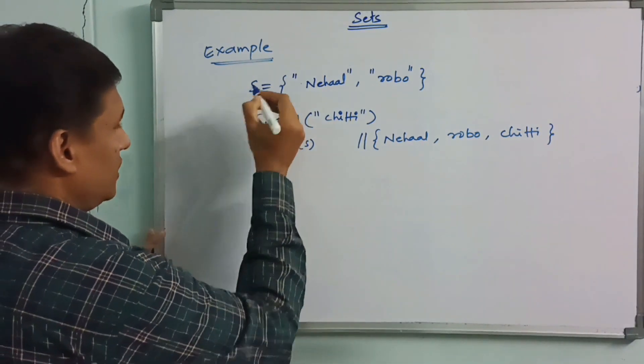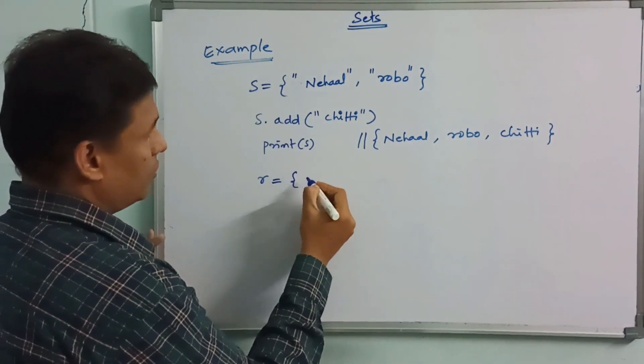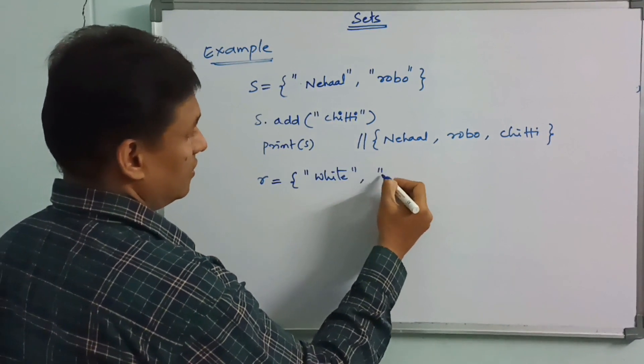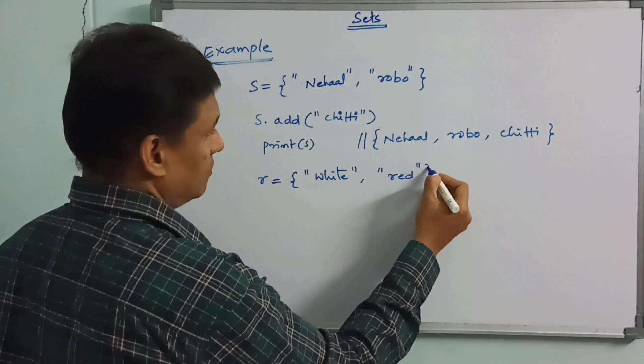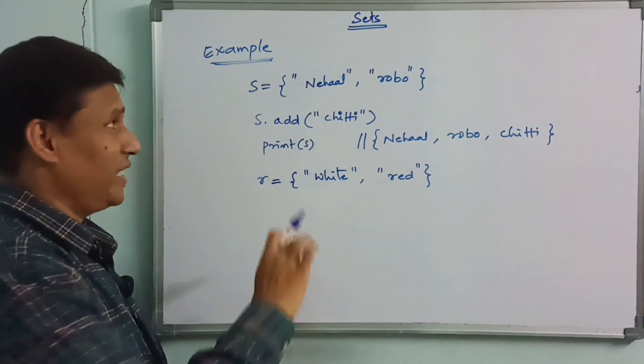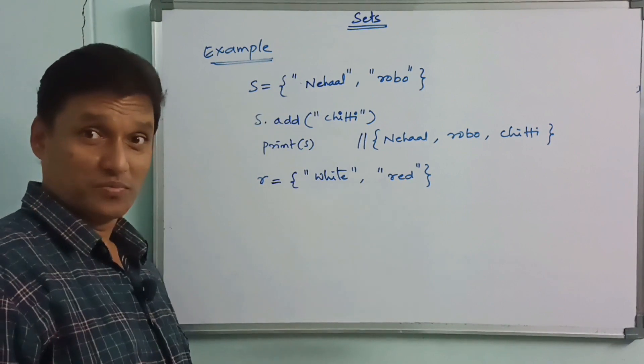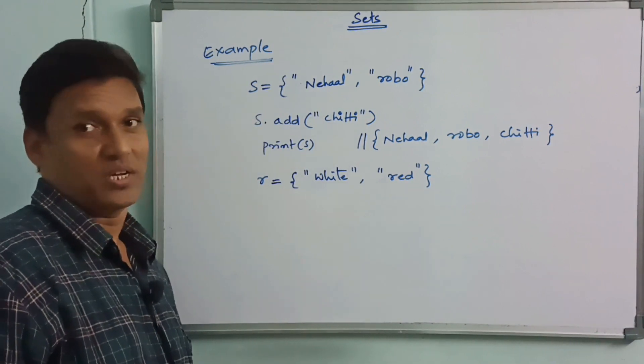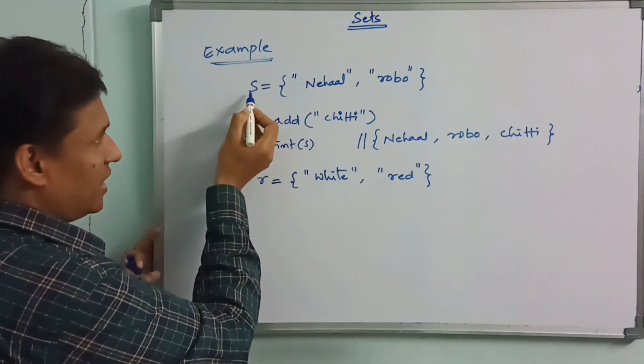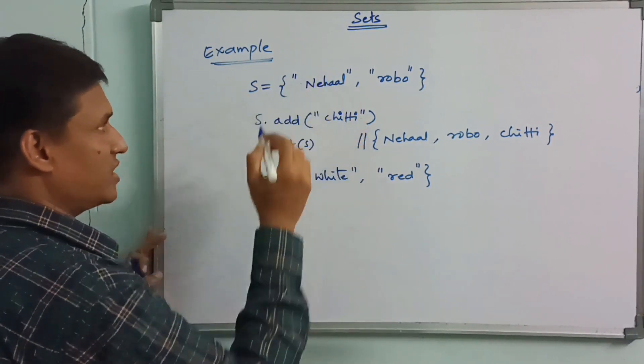For example, r equal to white, red. Two values. Using update function, to set multiple elements.